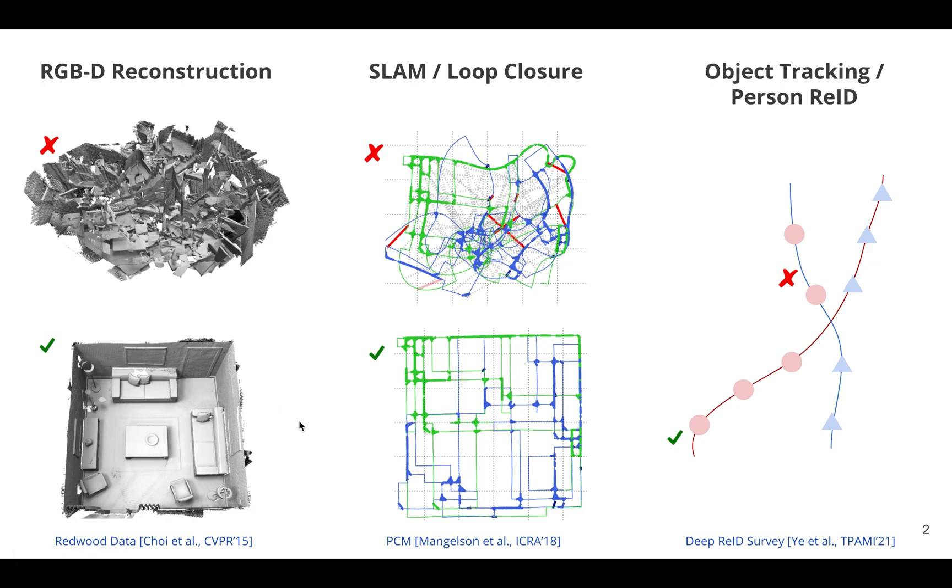And even with a few incorrect data associations, we can really end up with the totally wrong solution as shown here on the top row in some of these applications. So the goal of this talk is to talk about how to efficiently reject spurious data associations.